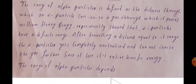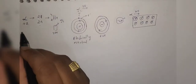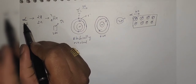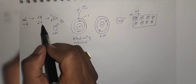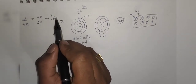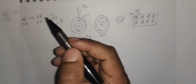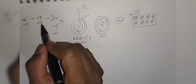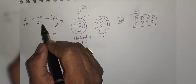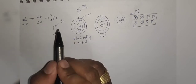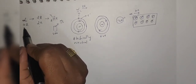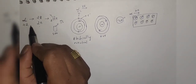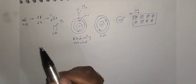Now let us discuss this by taking one example. We all know that an alpha particle is made up of two protons and two neutrons, or we can call this alpha particle a helium nucleus. Protons are positively charged and neutrons are electrically neutral. Due to two protons, the alpha particle carries a plus two charge, and this alpha particle is capable of ionizing electrically neutral atoms.